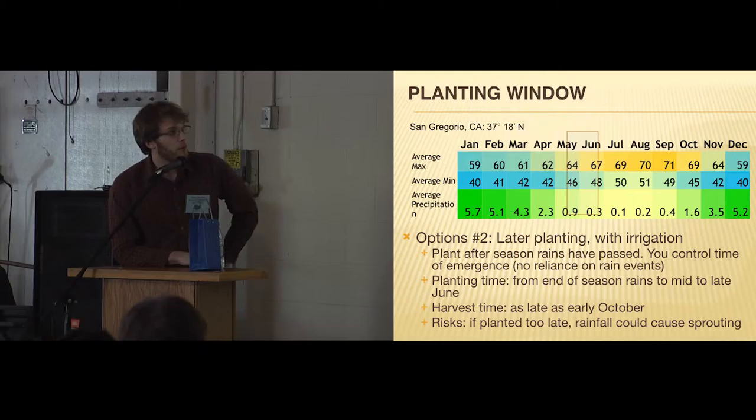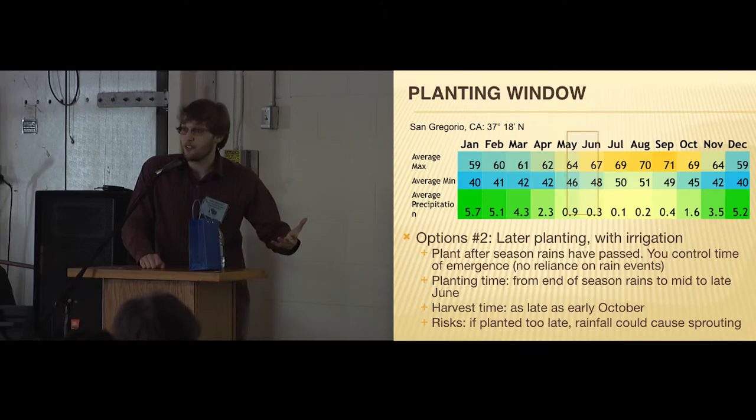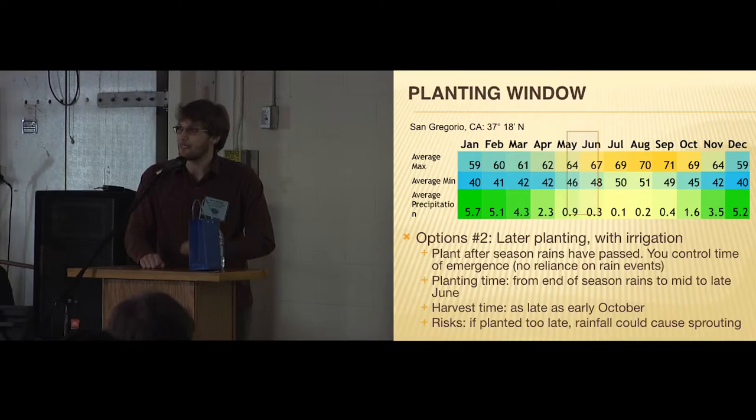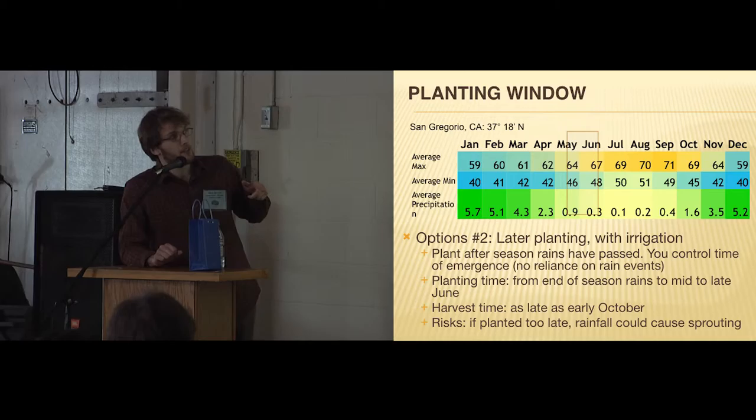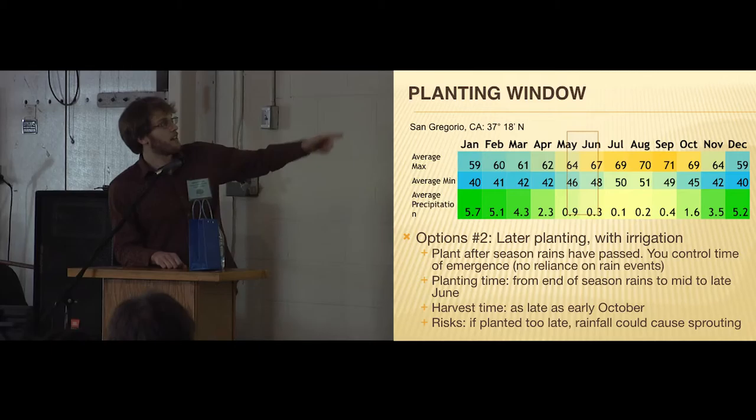The second option would be later planting. That would require irrigation just to get the plants started. If you are past those seasonal rains, you'll need some water to get started. The advantage is you're not waiting for rains to come, so it allows you some control over when it will emerge. I made the connection with Bill of the Lake Fleet last year. This ended up getting planted about mid-June and it finished early October. It did work really well, definitely got harvested before the rain. This could be a second window if you're looking for later planting.